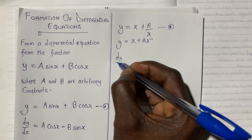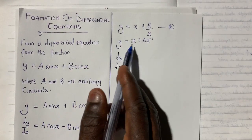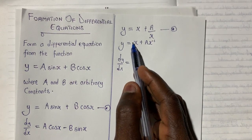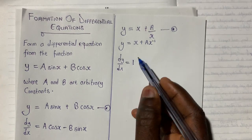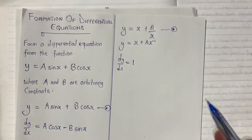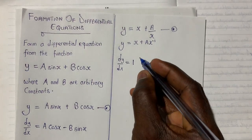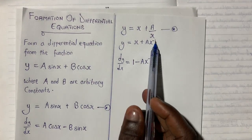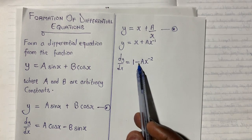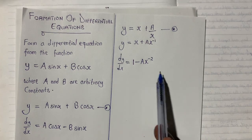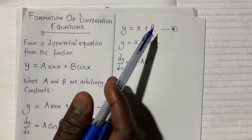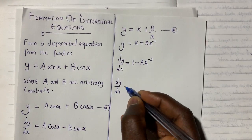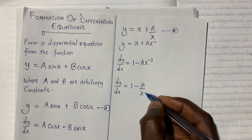So let's differentiate. We have dy/dx equal to: the differential of x is 1 (since the power is one, one times x to the power zero equals one). So we get one minus a·x to the power minus two. Multiplying by negative one and subtracting one from the power gives minus two. Rewriting back in the original form: dy/dx equals one minus a over x².